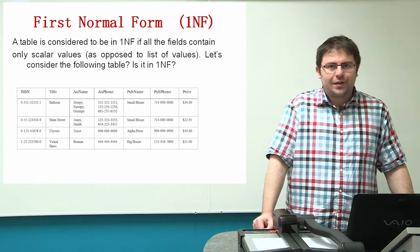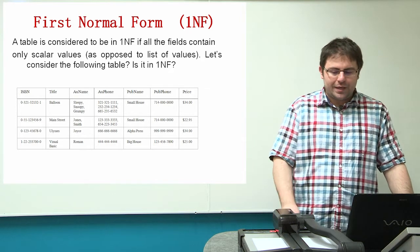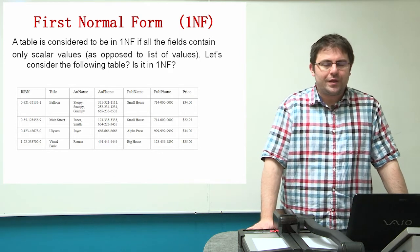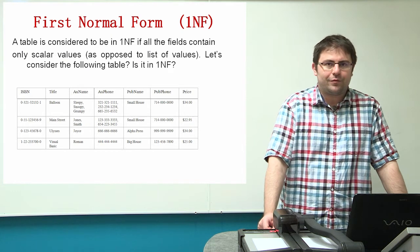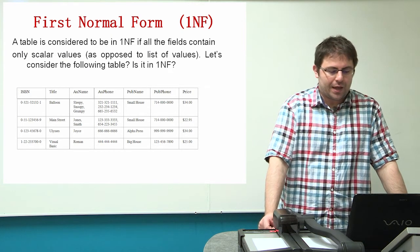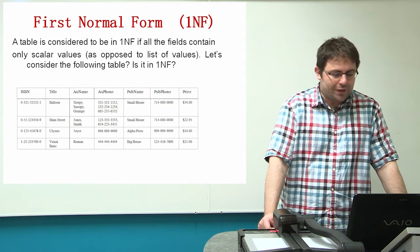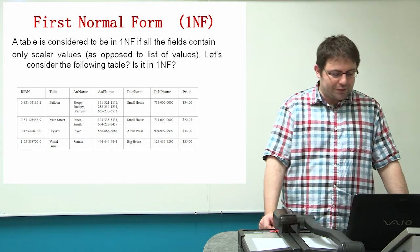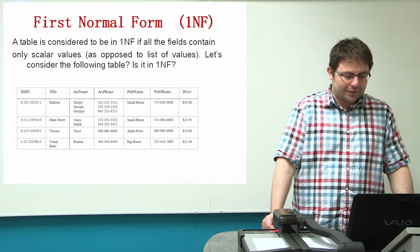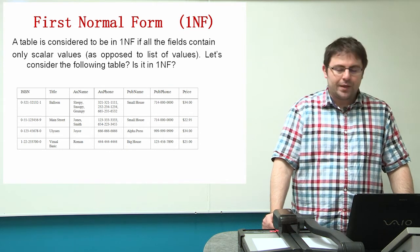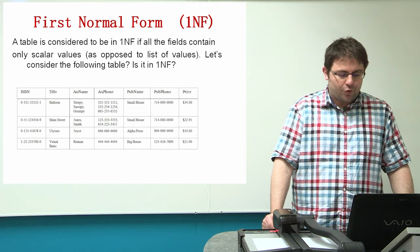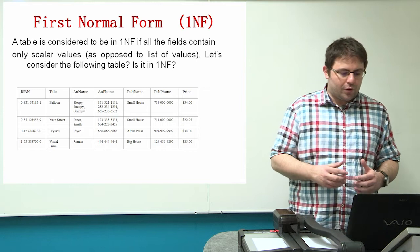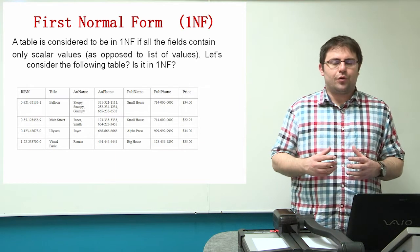Normalization has three stages, three normal forms, and each of these forms follows a specific rule. A table is considered to be in the first normal form if all the fields contain only scalar values, as opposed to a list of values. Consider the following table — is it in the first normal form? No, it is not. Because some values, for example the ISBN number or the title, duplicate themselves for different values of the name. We call this duplicated data, and we call the name of those values repeating attributes.